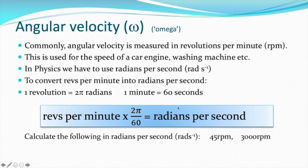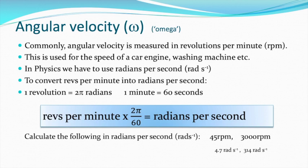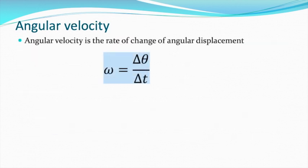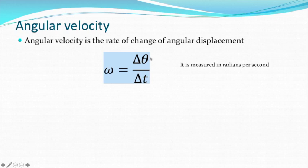You can pause here and work out what 45 rpm is: 45 times 2 pi divided by 60. Or 3000 rpm: 3000 times 2 pi divided by 60. And you'll get both of them in radians per second. So just like speed equals distance over time, angular velocity is the change in angle over the change in time. Because angle is in radians and time is in seconds, it's in radians per second.